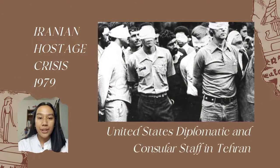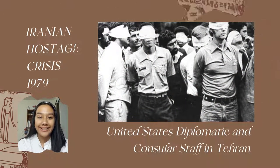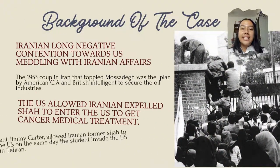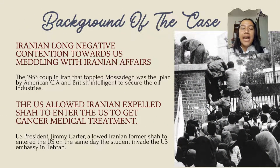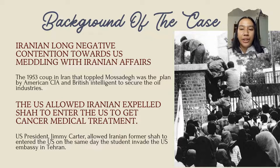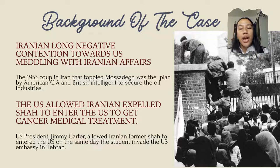We are going to talk about the Iranian Hostage Crisis in 1979. The background of the case involves Iran's long-standing negative sentiment towards U.S. meddling in Iranian affairs. The 1953 coup in Iran that toppled Mossadegh was planned by the American CIA and British intelligence to secure the oil industries, and many Iranians condemned U.S. interference and slowly grew anti-American feelings.